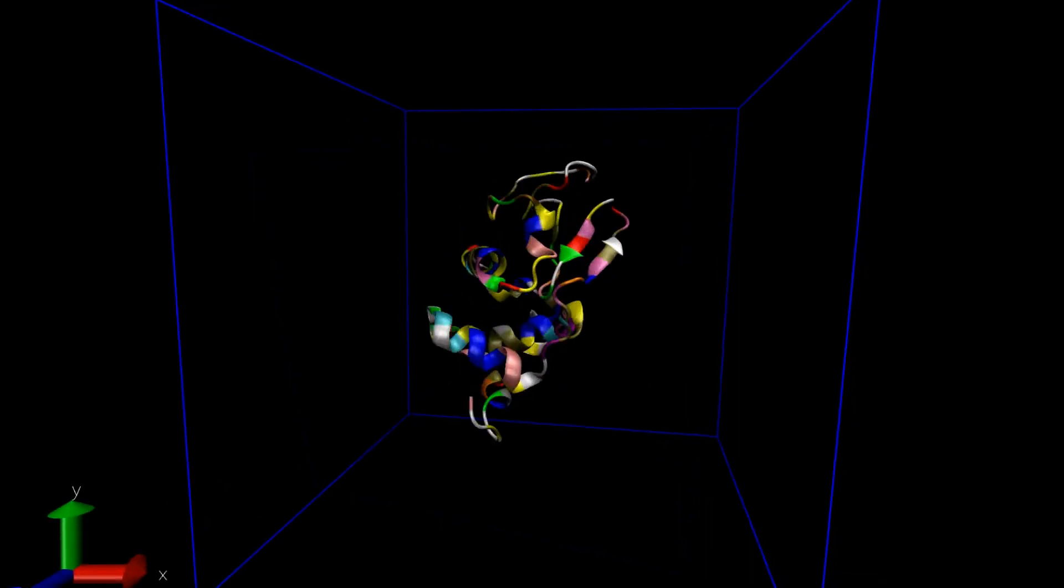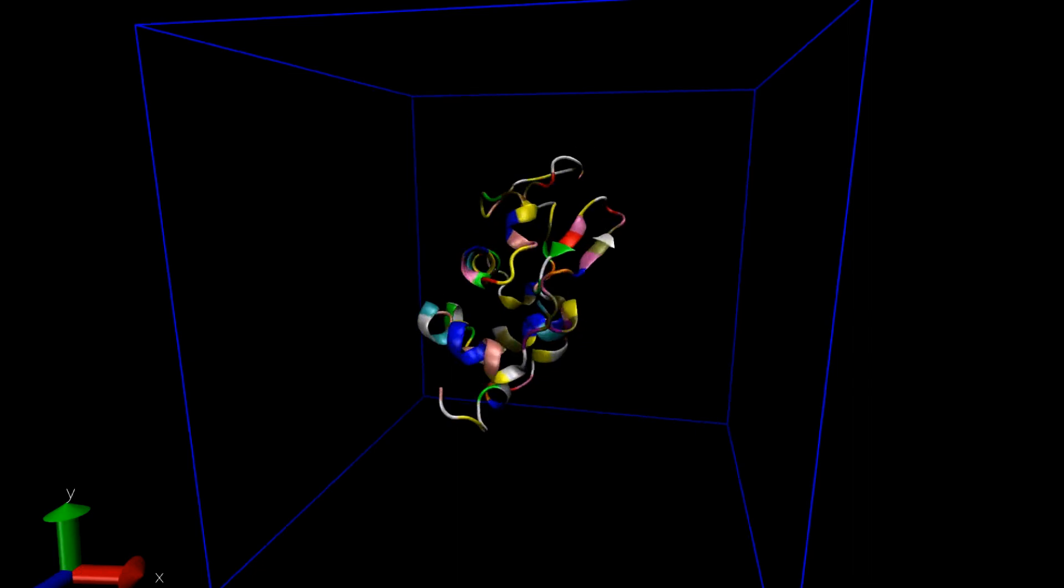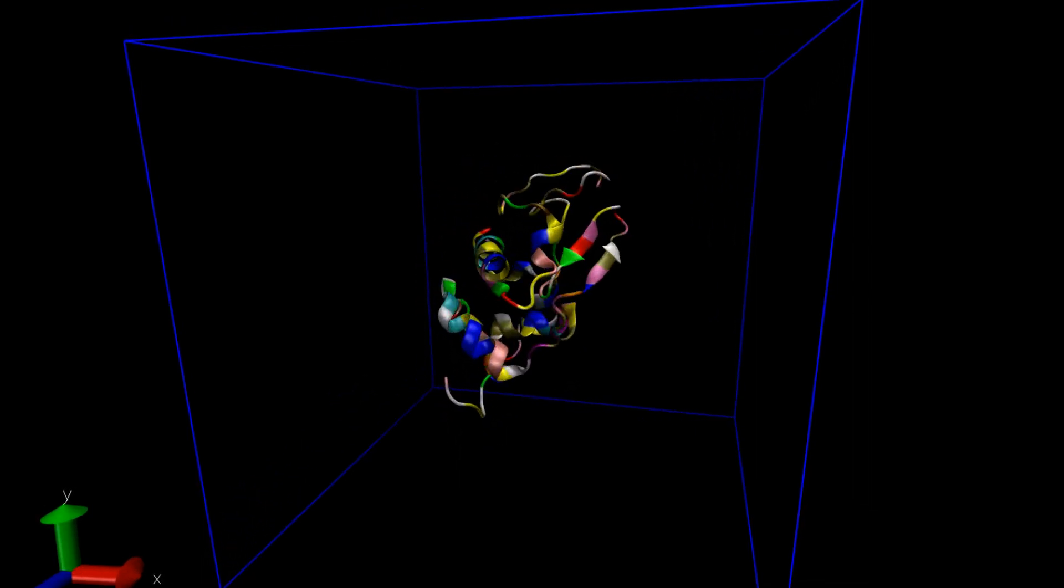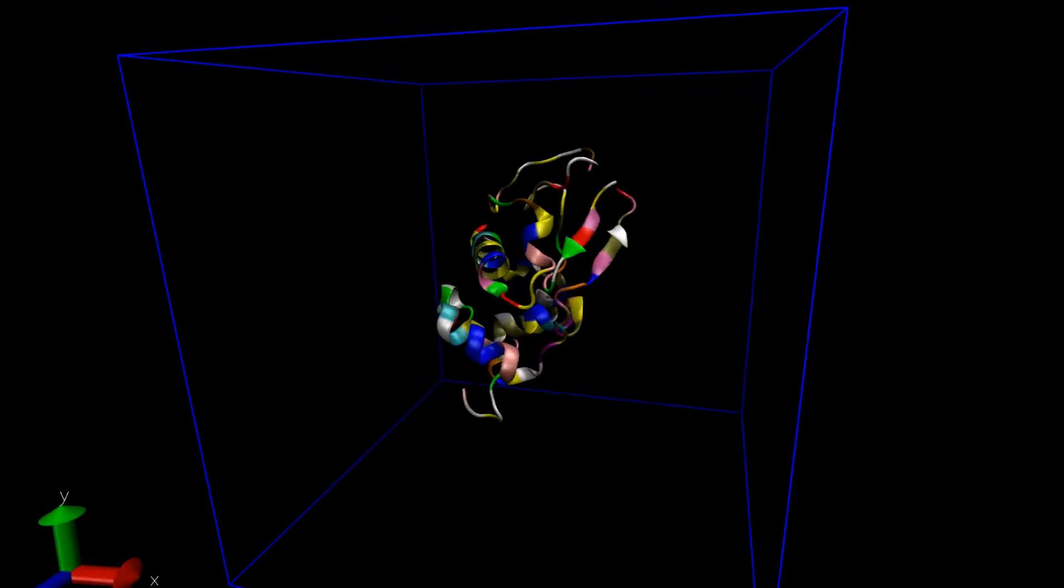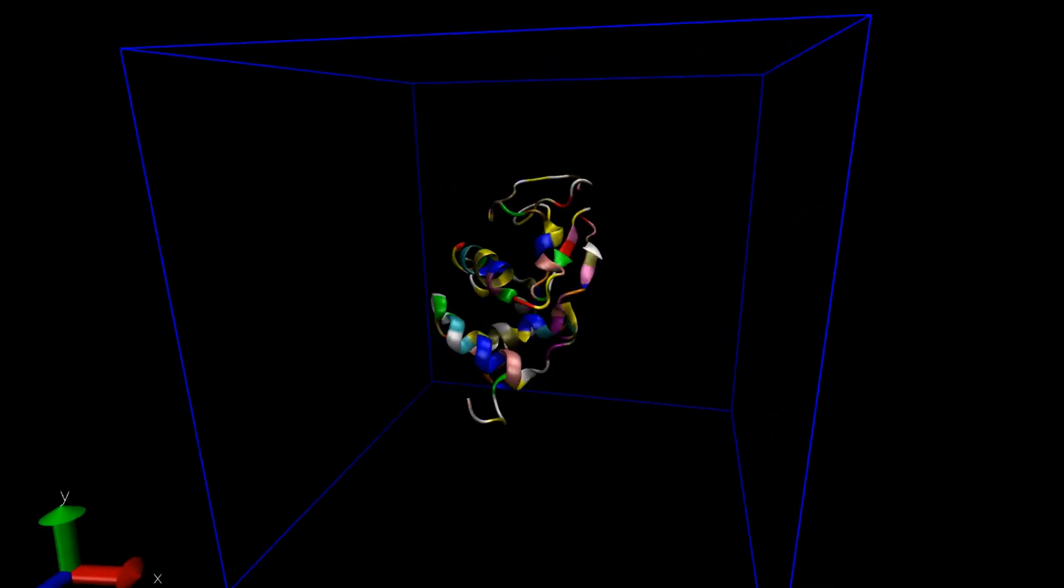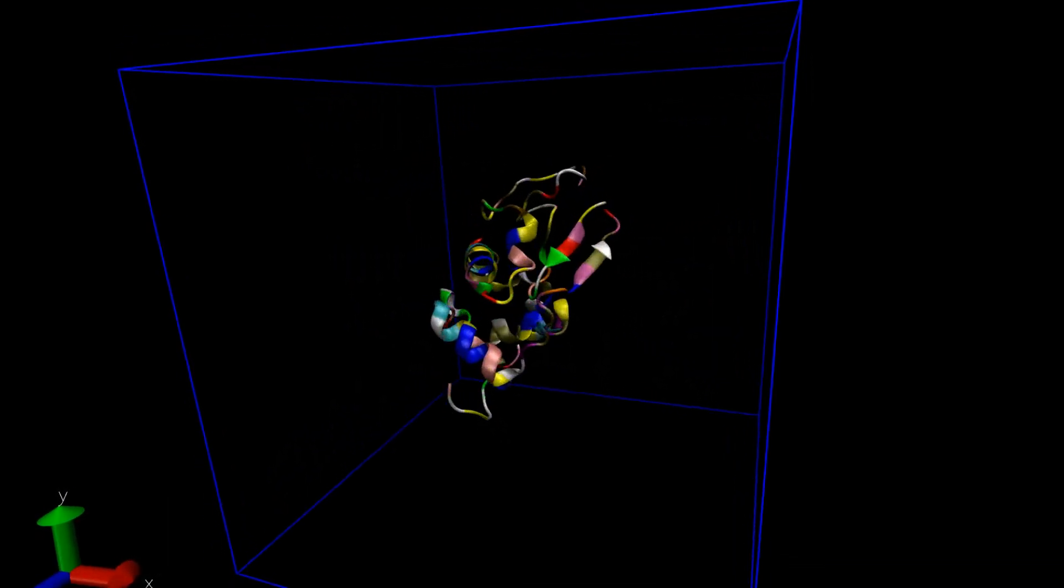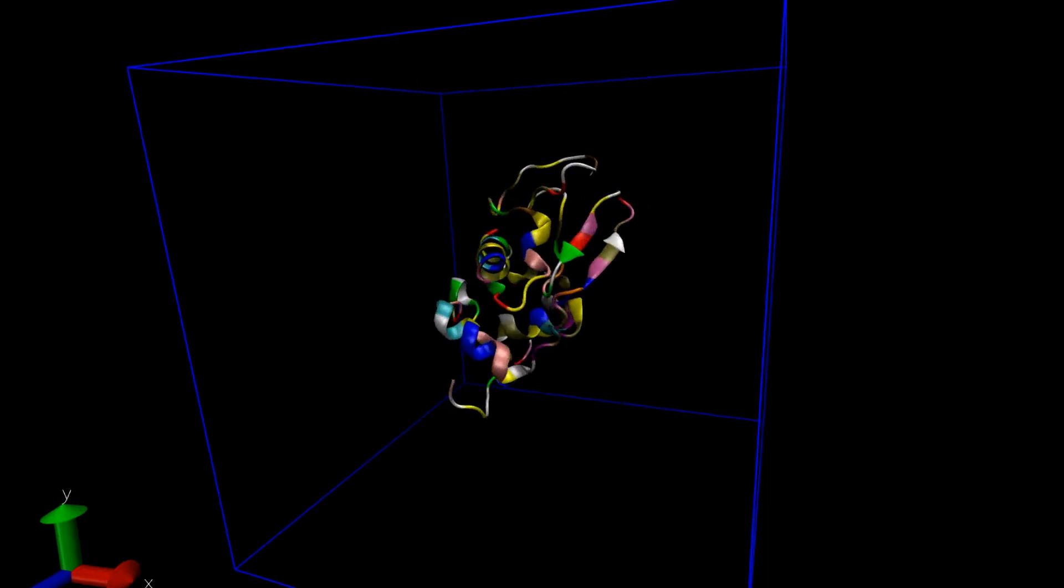In this movie what you're seeing is the beta sheets and the alpha helices of the protein called lysozyme. You can clearly see that under a force field the protein shows various conformational changes that are really important for understanding its function.